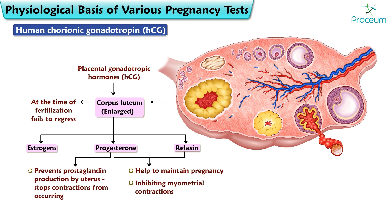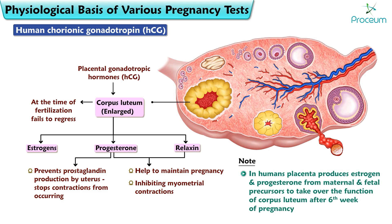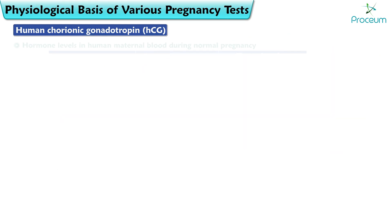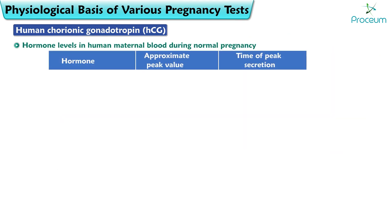Progesterone and relaxin help maintain pregnancy by inhibiting myometrial contractions. Progesterone prevents prostaglandin production by the uterus, which stops contractions from occurring. In humans, the placenta produces sufficient estrogen and progesterone from maternal and fetal precursors to take over the function of the corpus luteum after the sixth week of pregnancy. Here is a table showing hormone levels in human maternal blood during normal pregnancy.